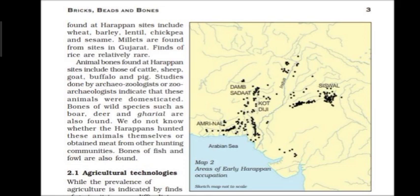Rice finds are relatively rare, mostly from sites in Gujarat. Animal bones found at Harappan sites include those of cattle, sheep, goat, buffalo, and pig. Studies by archaeozoologists — archaeologists who research animal evidence — indicate these animals were likely domesticated. Some wild animal bones such as boar, deer, and gharial were also found, though it is not clear whether they were hunted directly or obtained from hunting communities. Bones of fish and fowl were also found.